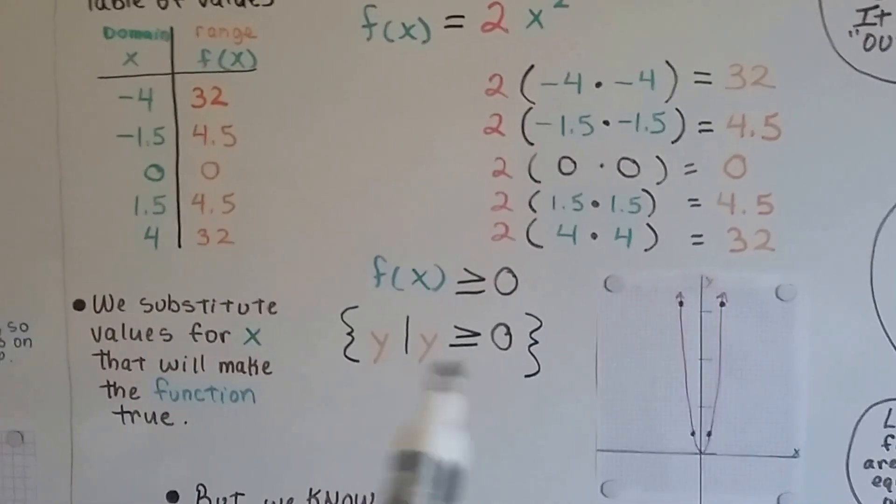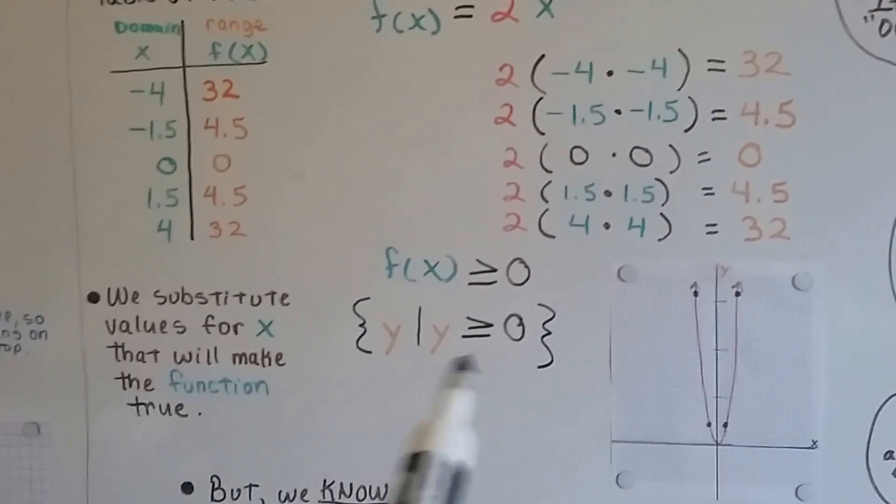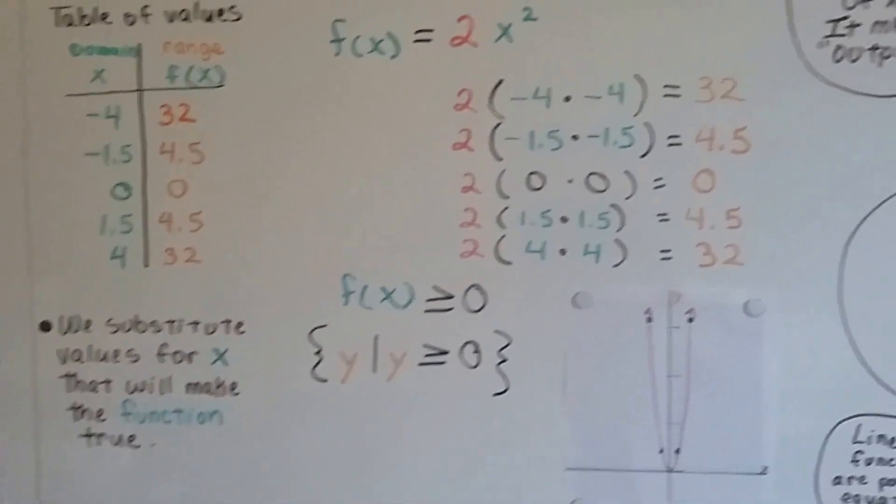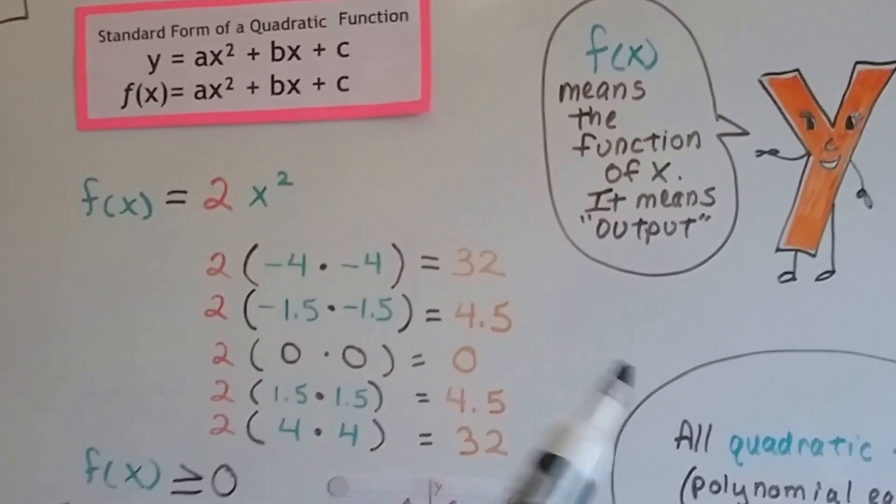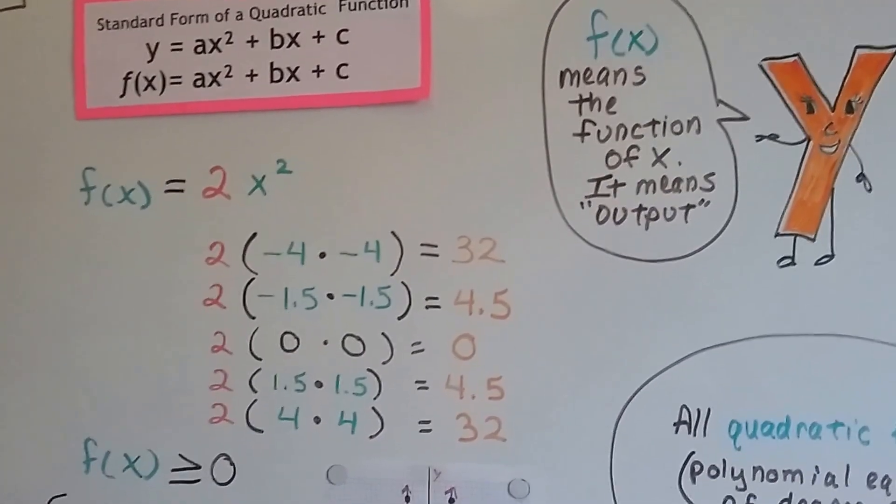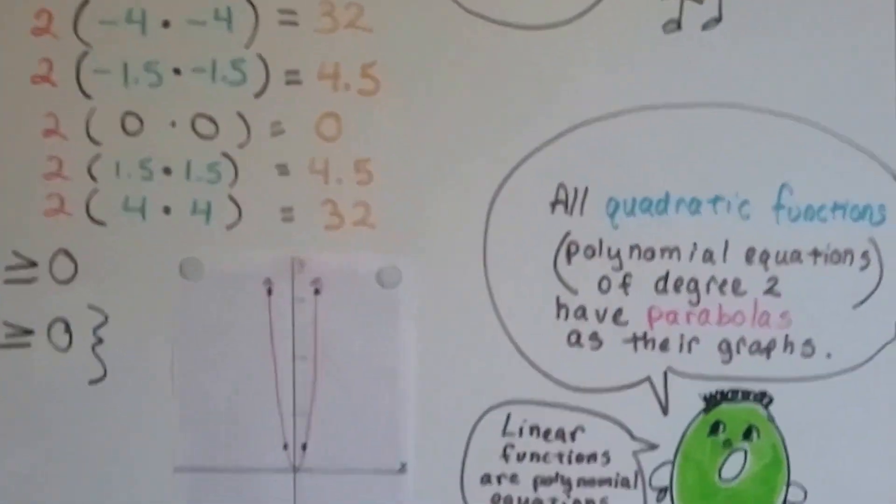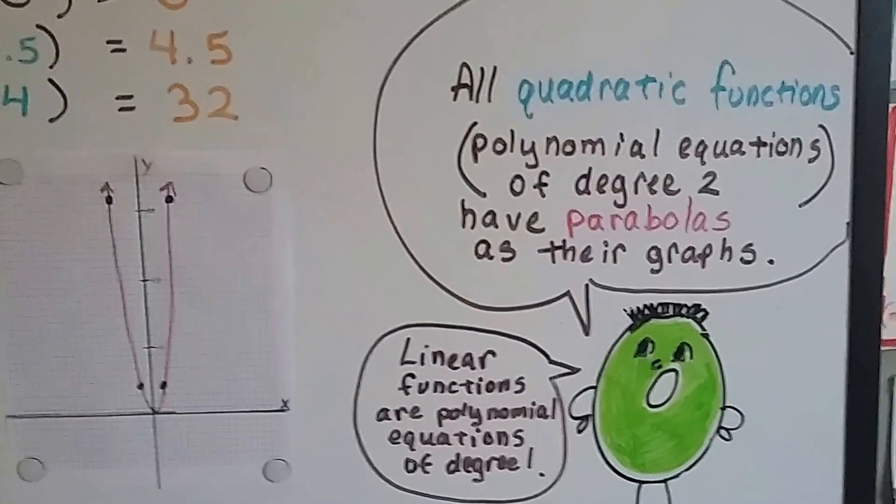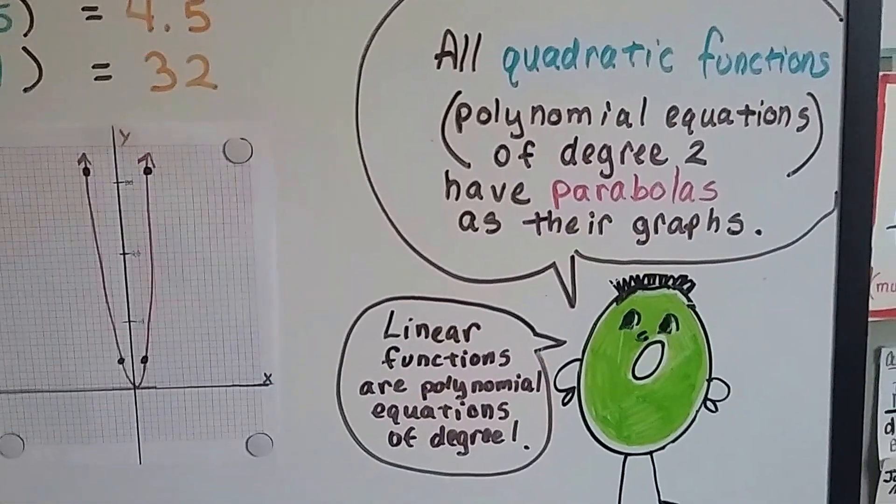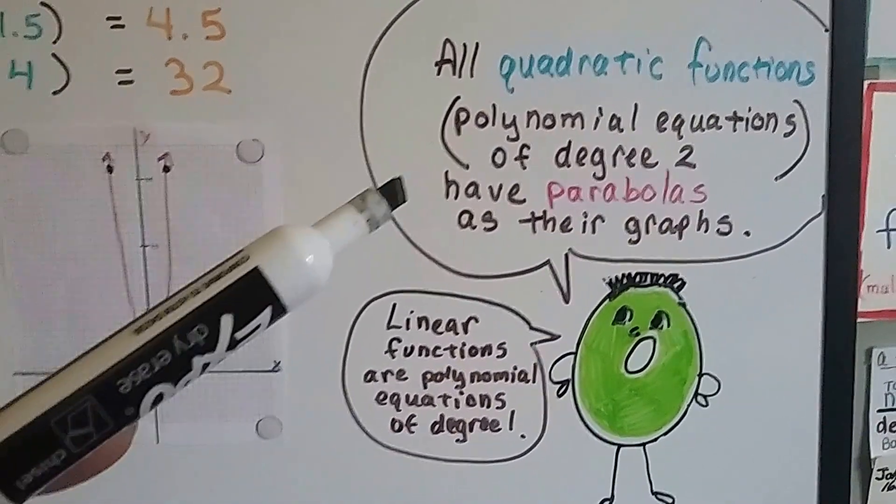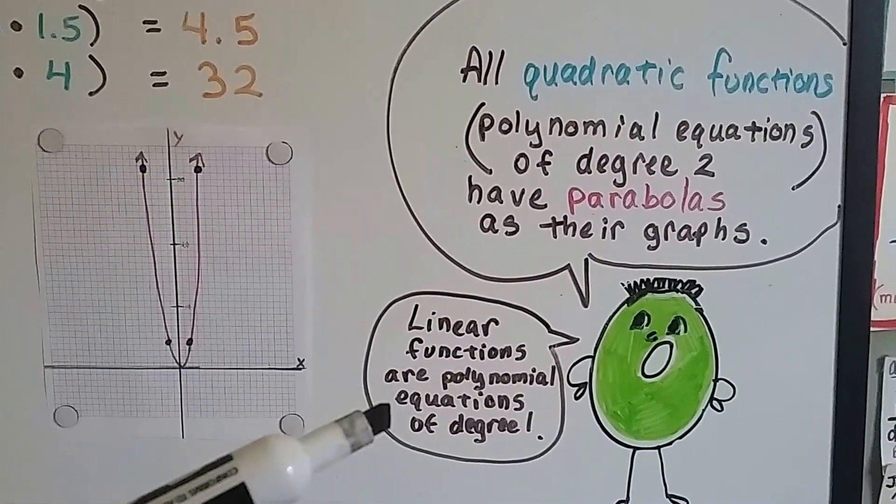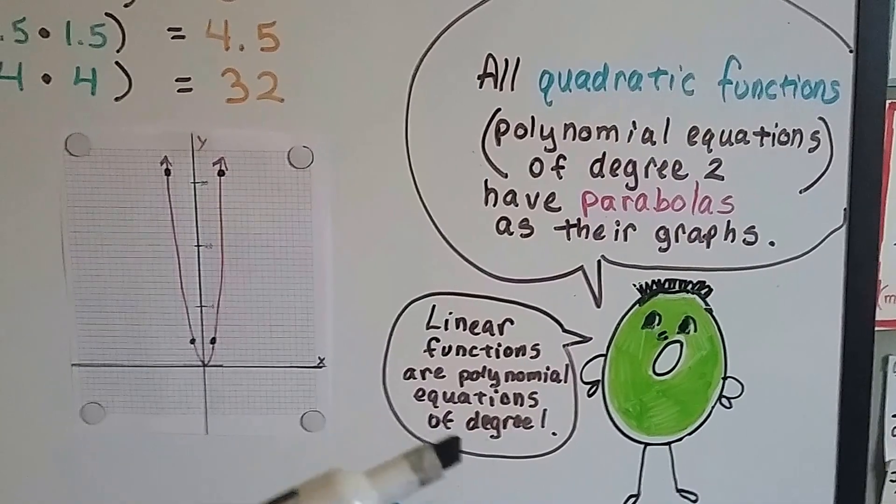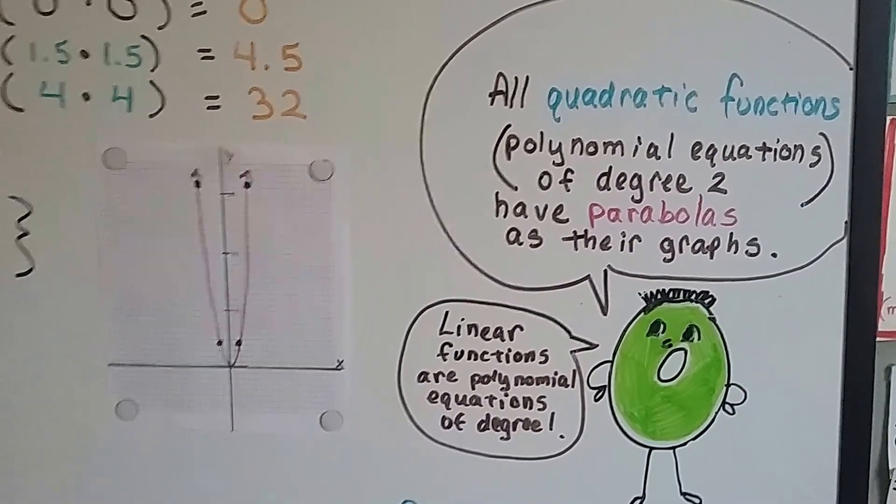And we can write our solution in set builder notation. So, this f with the little x in parentheses means the function of x. It means the output. And all quadratic functions, they're also called polynomial equations of degree 2 or second degree, have parabolas as their graph. The linear ones we did a couple chapters ago are polynomial equations of degree 1 or first degree. Alright?